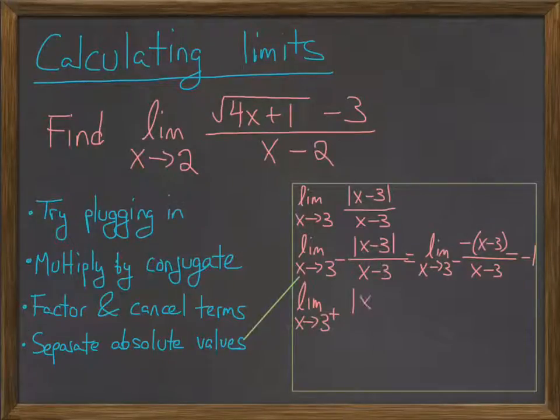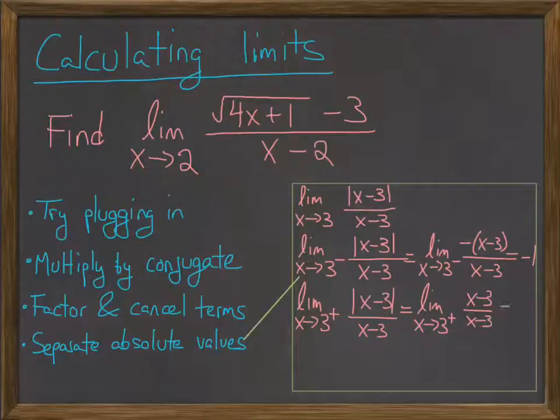Similarly, you look at x goes to 3 from the right, and this time when you drop the absolute value signs, you don't need an extra negative, and you just get 1.